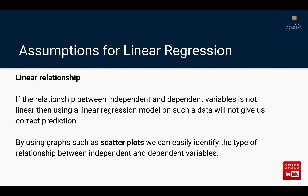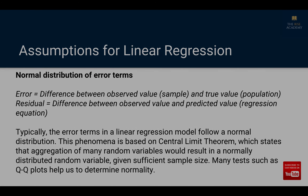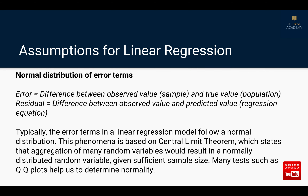The important assumptions are: linear relationship, normal distribution of error terms, no multicollinearity, no autocorrelation, and homoscedasticity. The first is linear relationship — it's linear regression, so obviously there has to be a linear relationship. If the relationship between independent and dependent variables is not linear, using a linear regression model on such data will not give correct predictions. By using scatter plots we can identify the type of relationship between the variables.